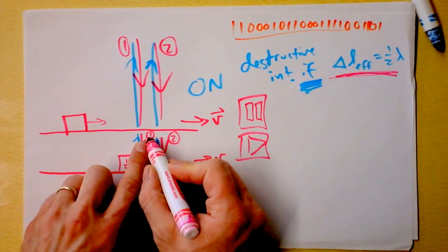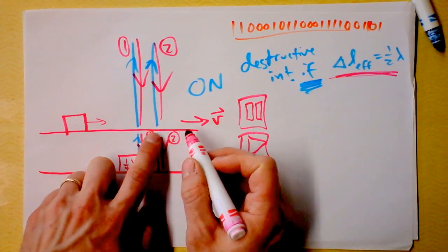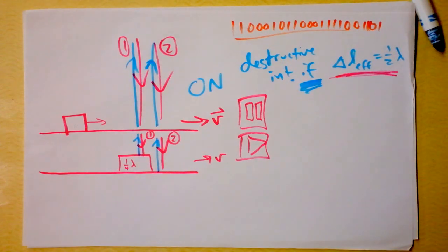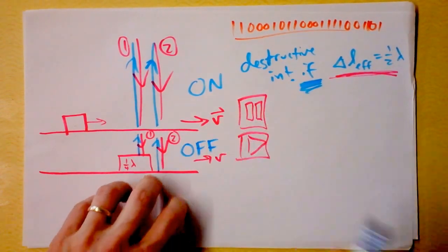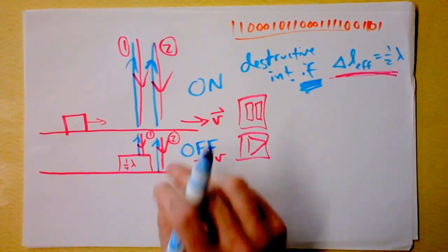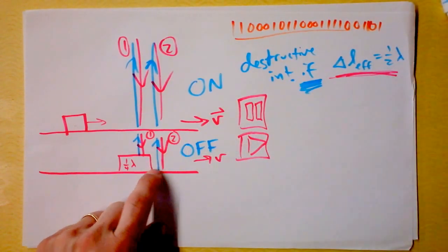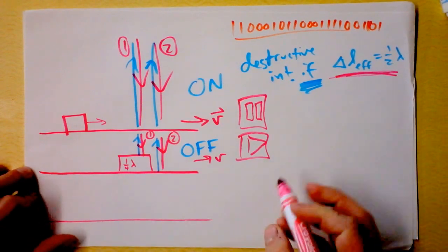And so now, light beam one and light beam two, when they come back up to the optical sensor, are completely out of phase, and this is therefore off. And you don't detect light when you're half on a bump and half off a bump.